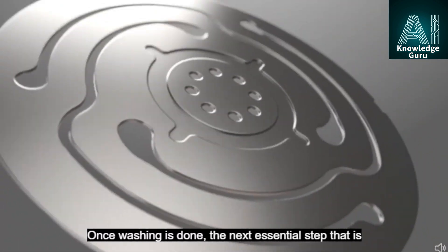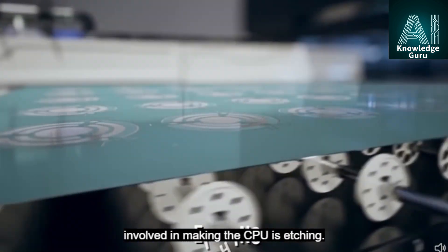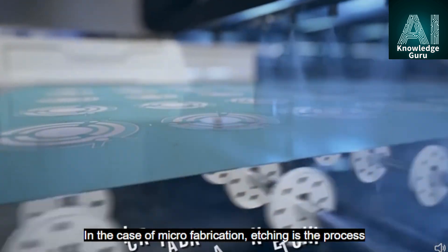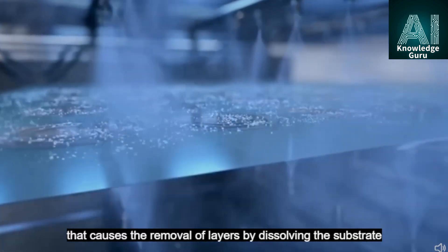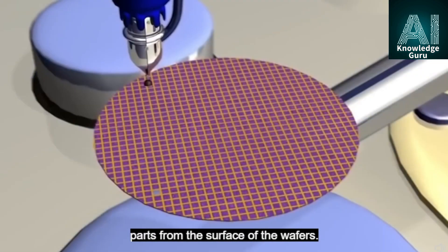Once washing is done, the next essential step that is involved in making the CPU is etching. In the case of microfabrication, etching is the process that causes the removal of layers by dissolving the substrate parts from the surface of the wafers.